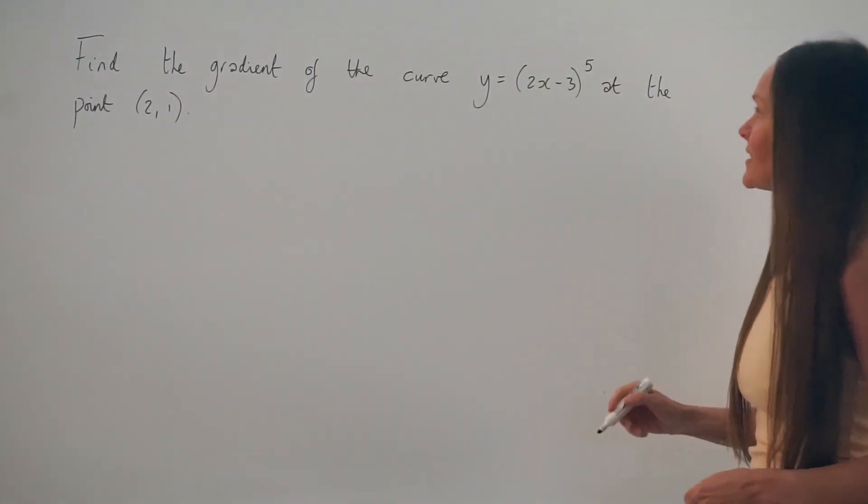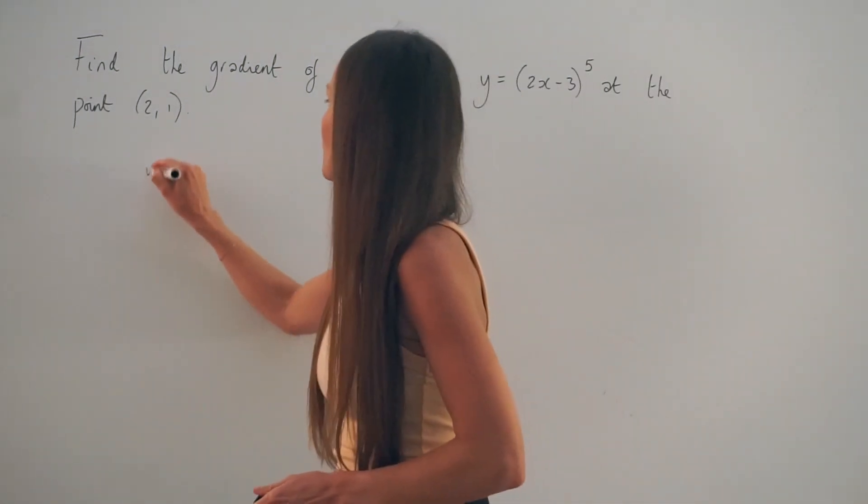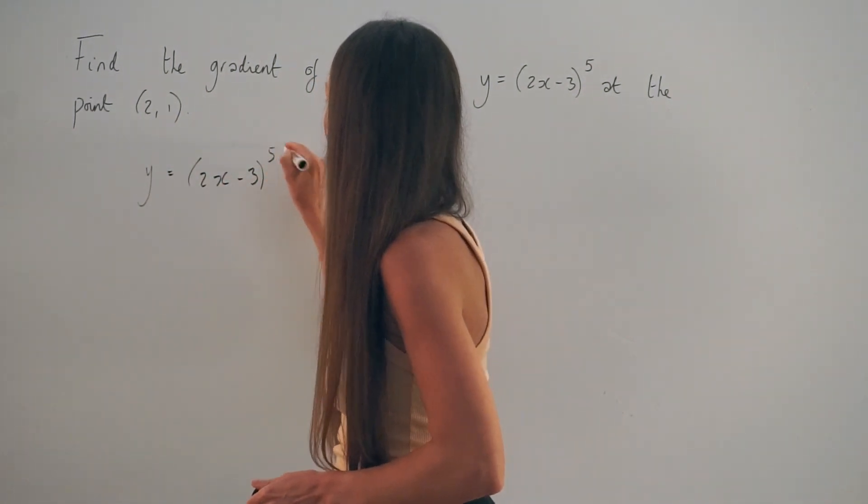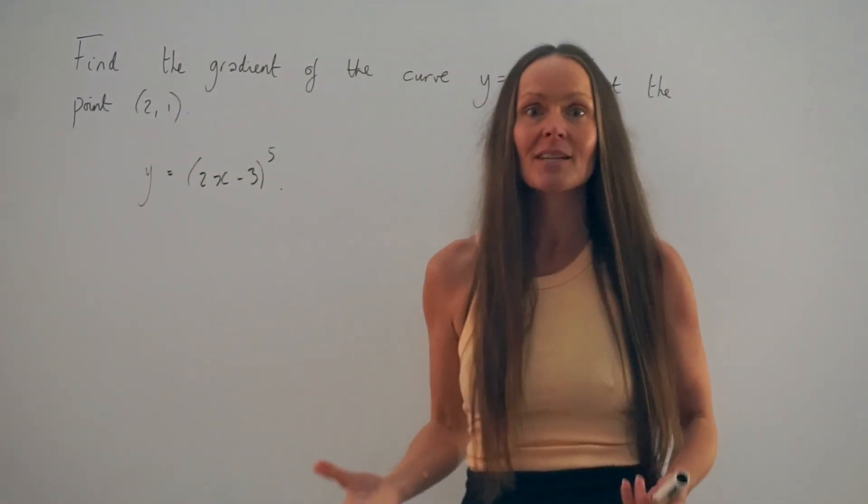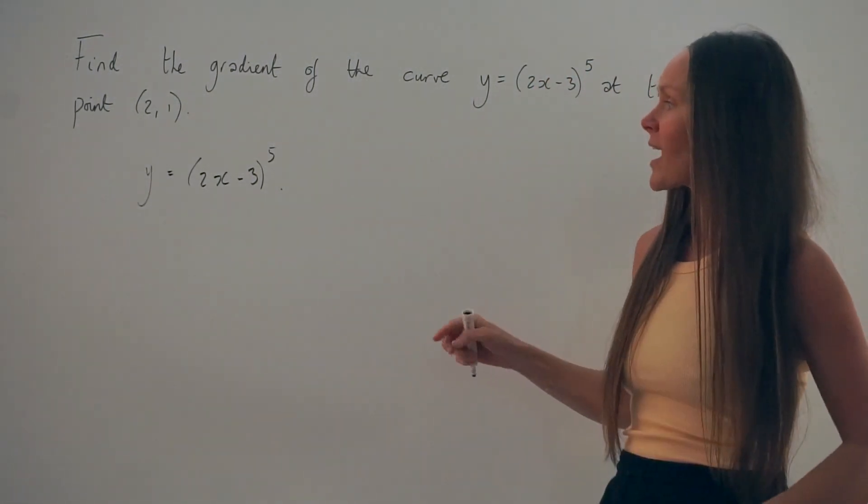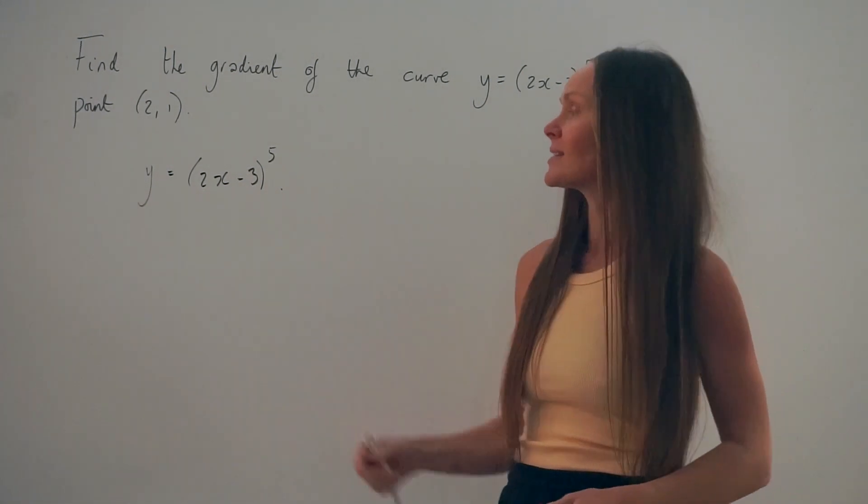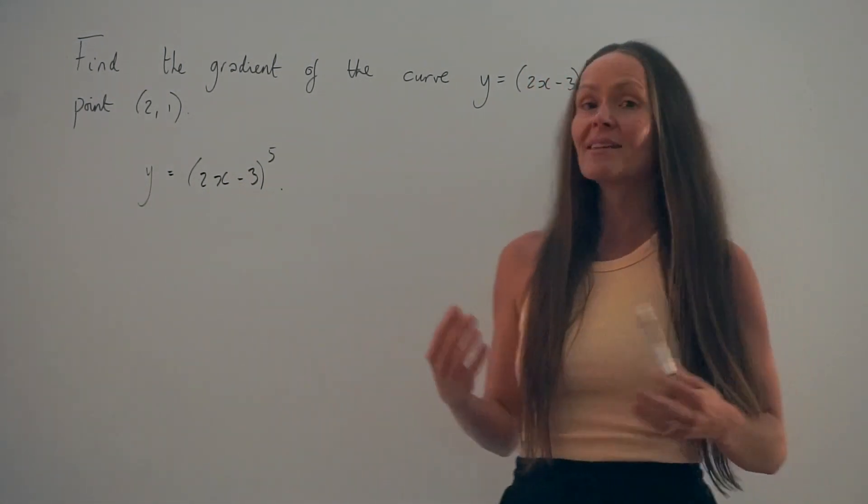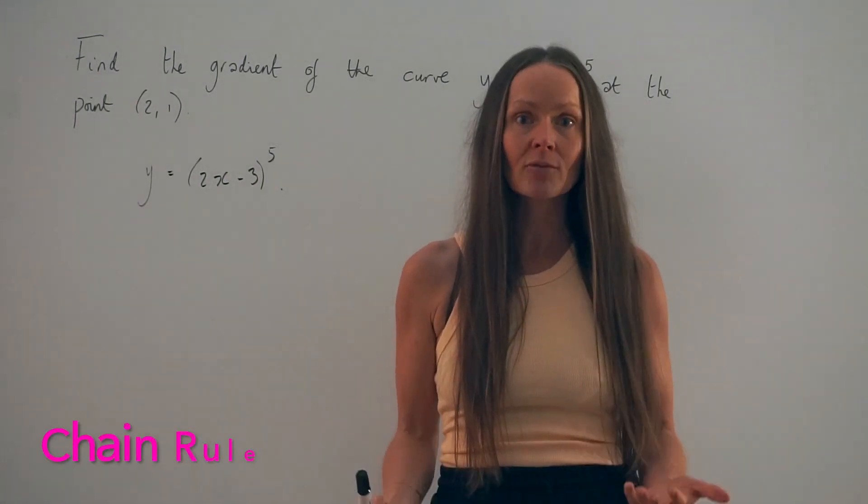So I'm going to start by writing this equation over here. So y equals (2x - 3) to the power 5, and I'm going to find the derivative, dy/dx, of this equation here. So notice how it's an expression with x inside the brackets, and there's a power outside the brackets. Whenever it's in this form, we need to use the chain rule to differentiate.